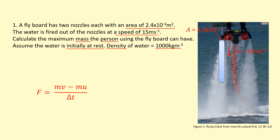We'll use the force equation to calculate the force, which will help us figure out the mass of the person. The water is initially at rest — zero meters per second — so that term cancels out. This is what we call a continuous flow problem, and it really helps if you let time equal one second. Setting time equal to one second, we can simplify the problem and effectively ignore the time term since dividing by one doesn't affect anything.